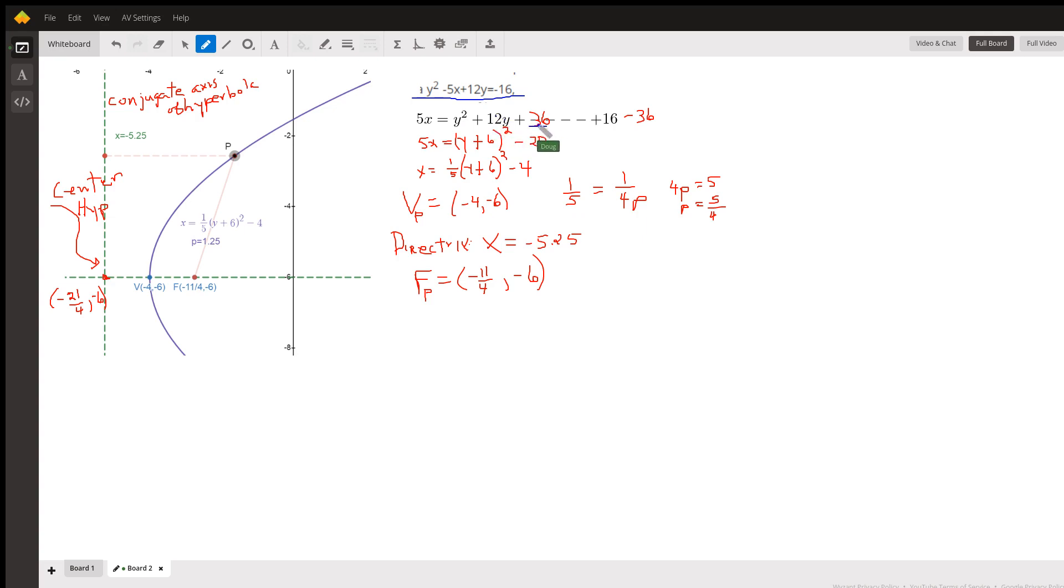So I would solve for x and complete the square to put it in vertex form. So I left a space here to complete the square. Half of 12 is 6, 6 squared is 36, so I've got to subtract 36 to keep the right side in balance. I can rewrite it as y plus 6, the quantity squared minus 20, divide by 5.